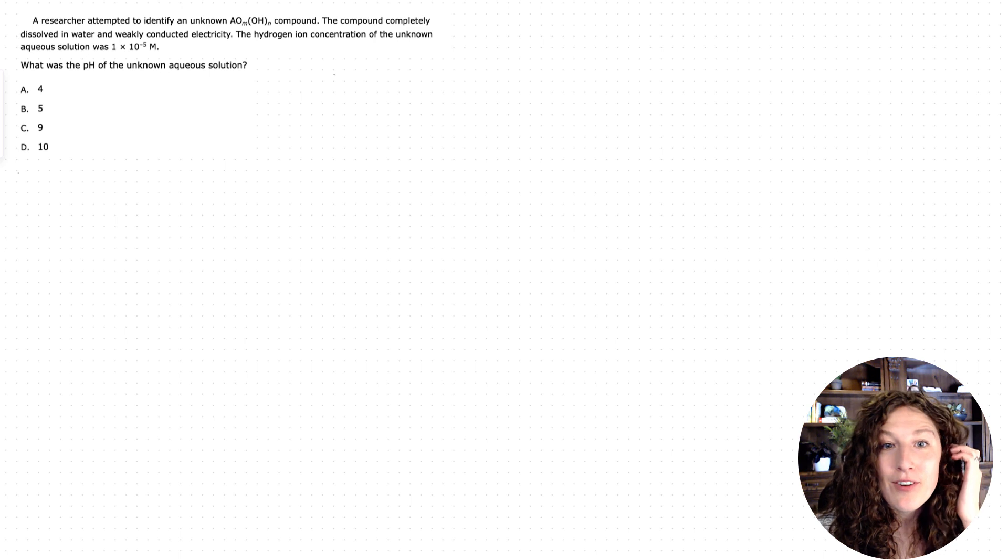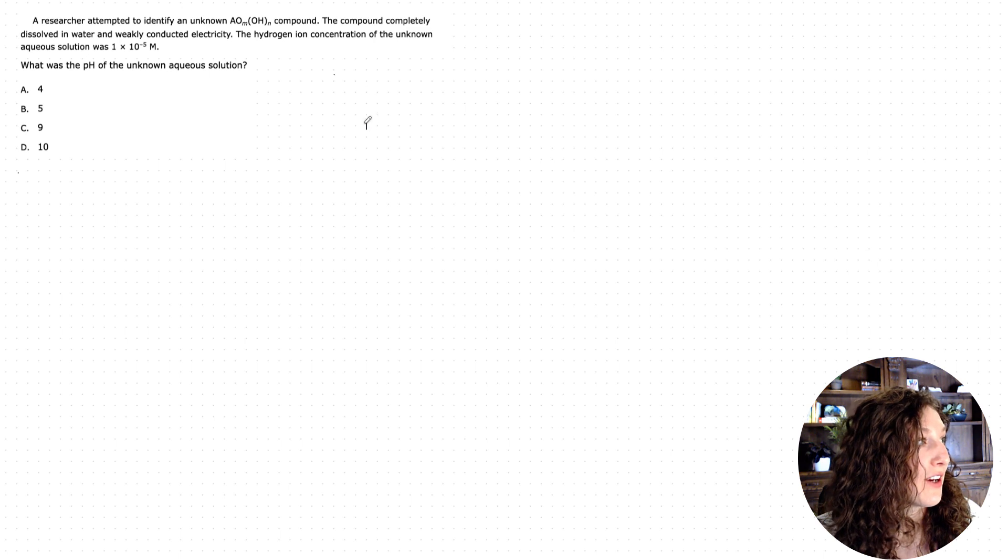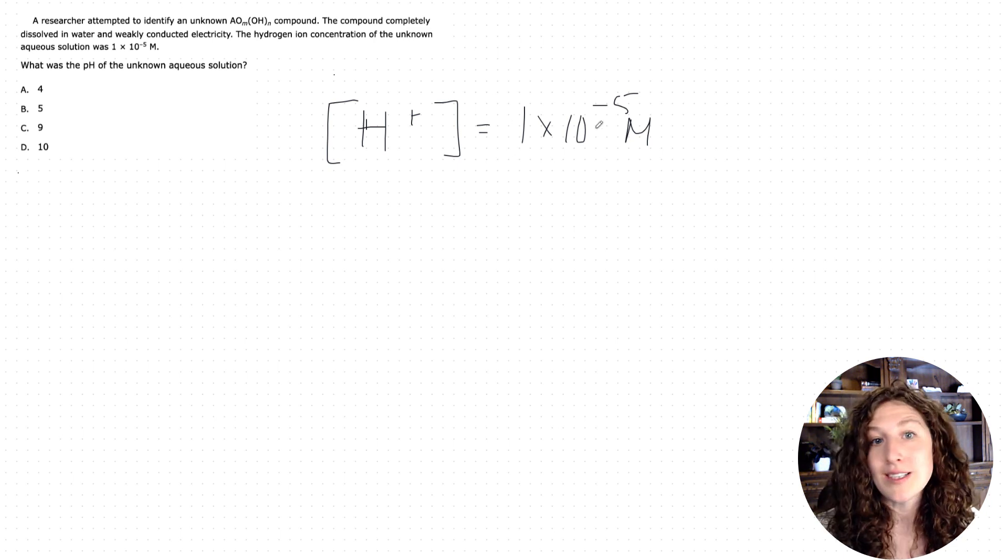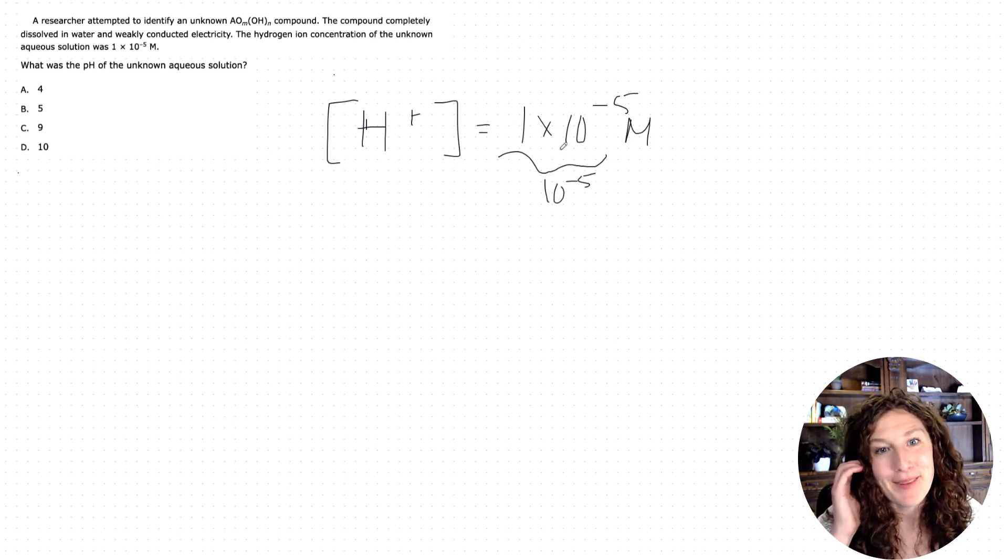Okay, so this question is a snippet from a passage. We've got a researcher who's looking at an unknown compound, and the important part for our question on pH is going to be the last sentence, where it says the hydrogen ion concentration [H+] is equal to 1 × 10^-5 molarity, moles per liter. And by the way, if you ever have like a 1 × 10^-5, you can consider this to just also be 10^-5. You don't need the 1 in front, it says the same thing. So either way, it's good to write that out.